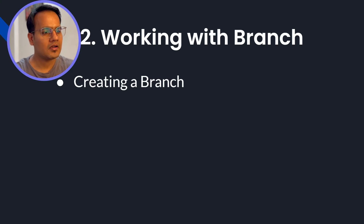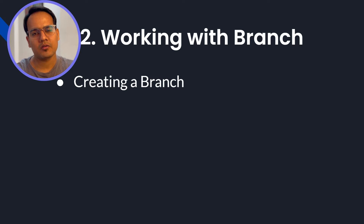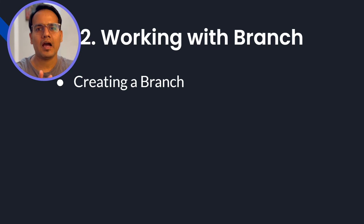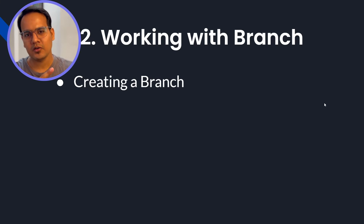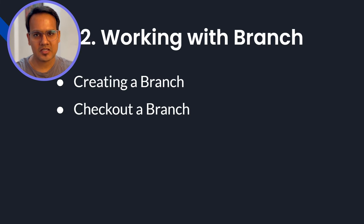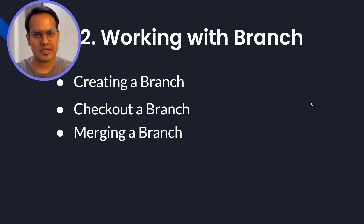The second part is working with branches. A branch is used when you are working on a particular codebase and somebody else wants to work on top of it — that's where the branching strategy comes into Git. If you're new to Git, I recommend checking a beginner video linked in the description. Under working with branches, you must know how to create a branch and how to check out a branch — that is, selecting the current branch you're going to work on.